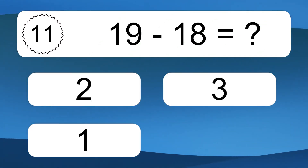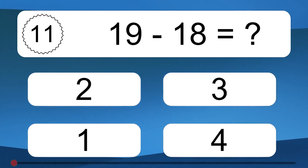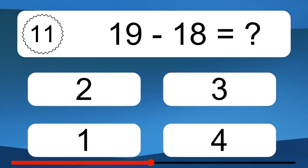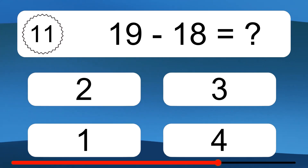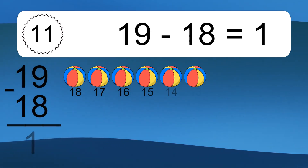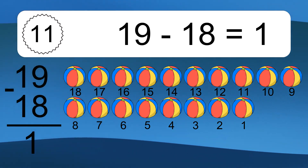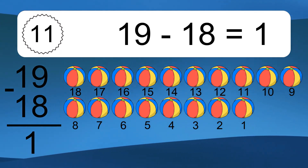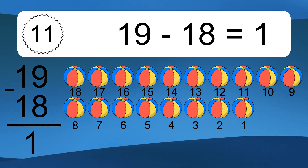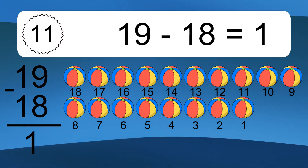19 minus 18 equals what? 19 minus 18 equals 1. Let's count it: 18, 17, 16, 15, 14, 13, 12, 11, 10, 9, 8, 7, 6, 5, 4, 3, 2, 1.